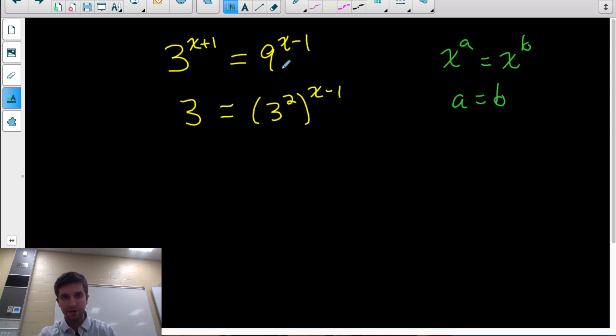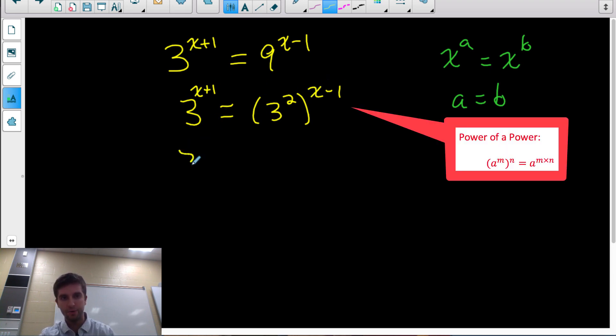If I can rewrite these powers with the same base, both base 3, now I know that the exponents have to be equal for this equation to be true. Oh, I forgot to write the x plus 1 up here. Okay, so now we can set the exponents equal to each other. Oh, before I do that, I might want to use my power of a power rule here to simplify. If I have an exponent on top of an exponent, I can rewrite it with those exponents multiplied together. So 2 times x minus 1, don't forget to distribute the 2 to the x and the negative 1, making it 2x minus 2.